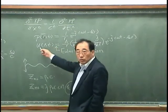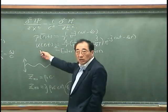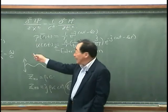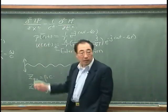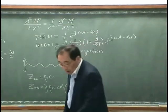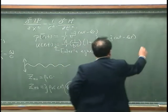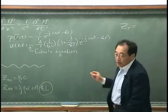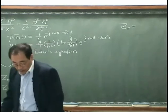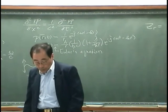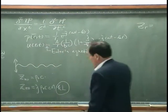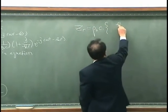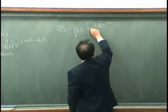By the same token, we want to see the impedance at R and time. The impedance turns out to be for the simple pole, or spherical wave. It looks like this — rho zero C — and I have two interesting terms.